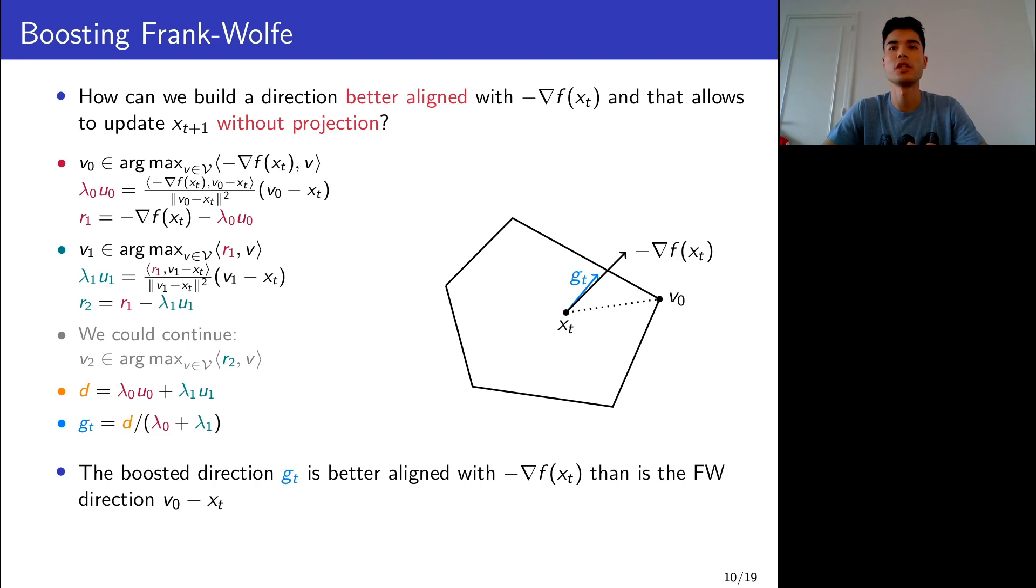Then we scale this vector to have feasibility of the new iterate. This vector g_t is better aligned with the negative gradient and gives a rule on how to update x_{t+1} in this direction. That guarantees x_{t+1} to be feasible, because you can notice that the line segment from x_t to x_t + g_t belongs to C. So for any step size between zero and one, the new iterate will belong to C.